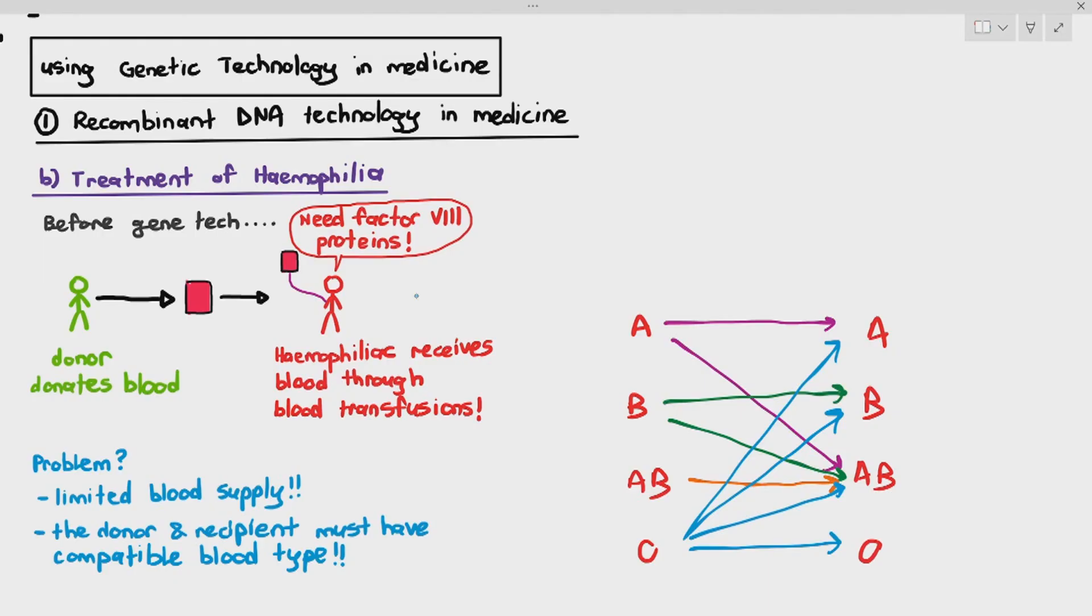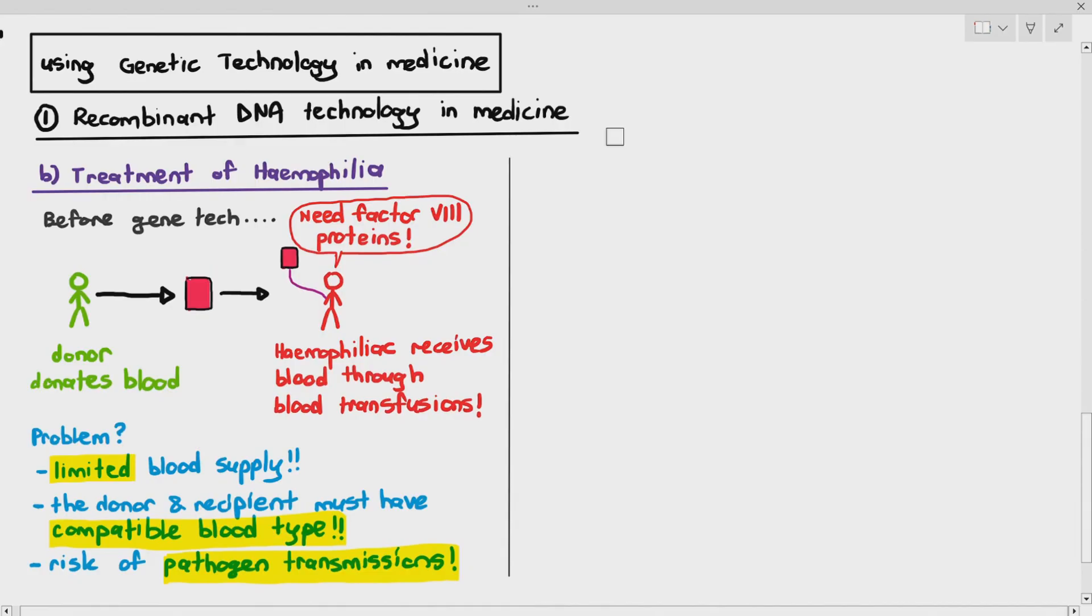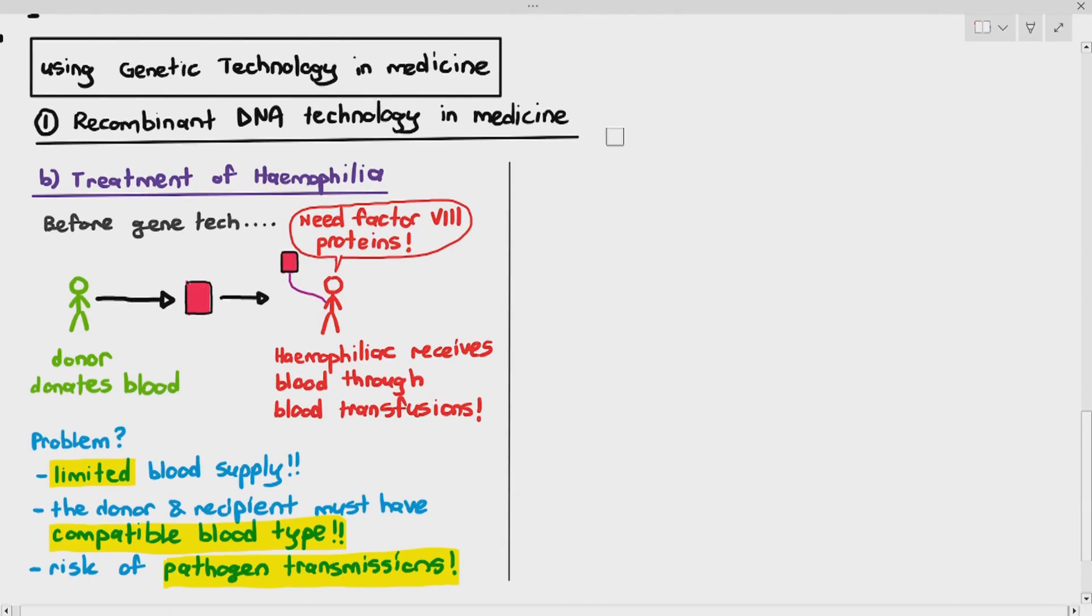And thirdly, there are also risks of pathogen transmissions. For example, HIV can spread through blood transfusion. If they are not careful, certain diseases like maybe malaria would also be able to be transmitted as well. So it comes with a lot of problems too because the person needs factor 8 proteins. They receive it from the blood of another person, but there are issues pertaining to it. So what do we do in this case? Again, we use recombinant DNA technology.